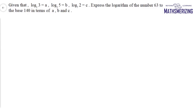The question is: given that log 3 to the base 2 is a, log 5 to the base 3 is b, and log 2 to the base 7 is c, we need to express the logarithm of 63 to the base 140 in terms of a, b, and c. So I'll need to find log 63 to the base 140.